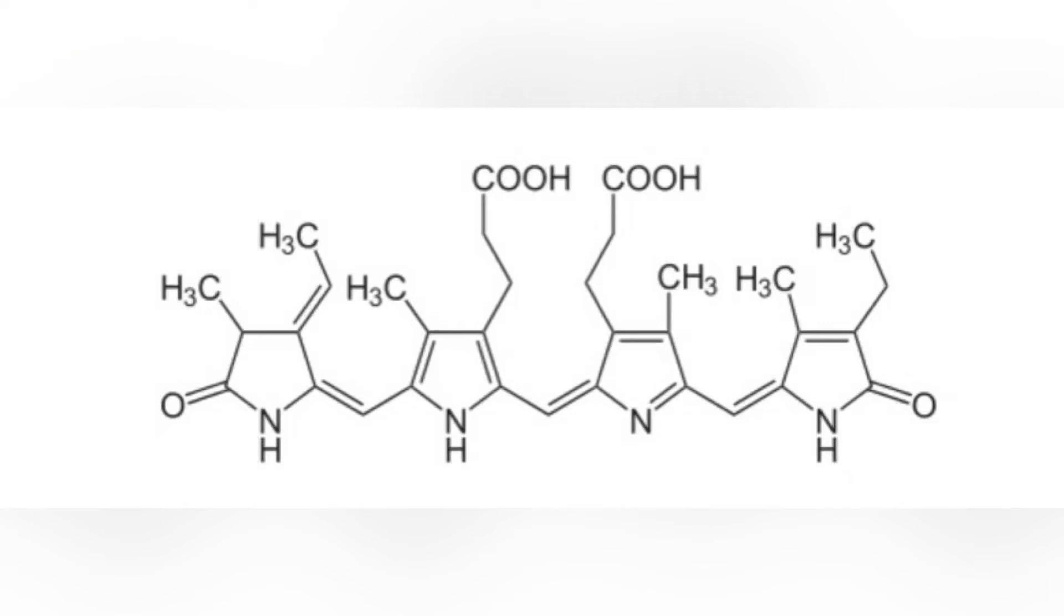The phycobiloproteins are made of two subunits having a protein backbone to which one to two linear tetrapyrrole chromophores are covalently bound.